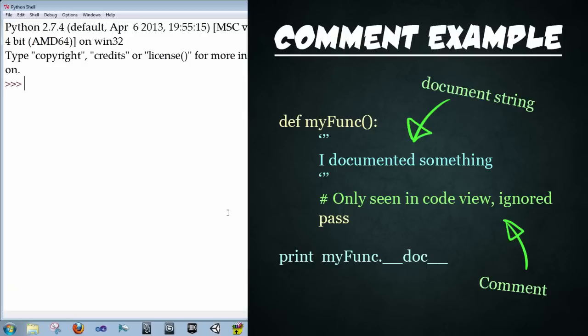Alright, so let's go ahead and see an example of both of these in action. We're going to type in def myFunc, open close parentheses, colon, enter, and then type three single quotes. One, two, three, enter, tab, and then we're going to type in whatever we want. And I'm going to type in, I documented something, period, enter. And then I'm going to type three more single quotes, enter. And I'm going to type a pound sign now, and type only seen in code view, comma, comp ignores.